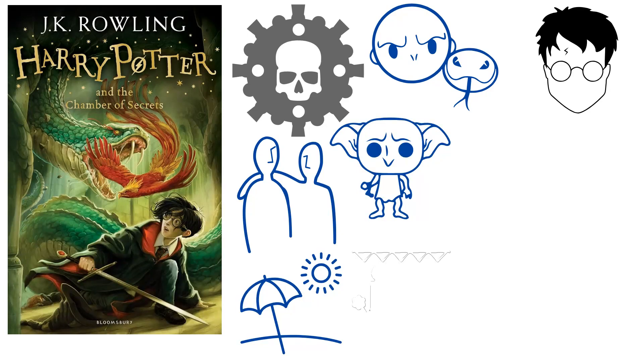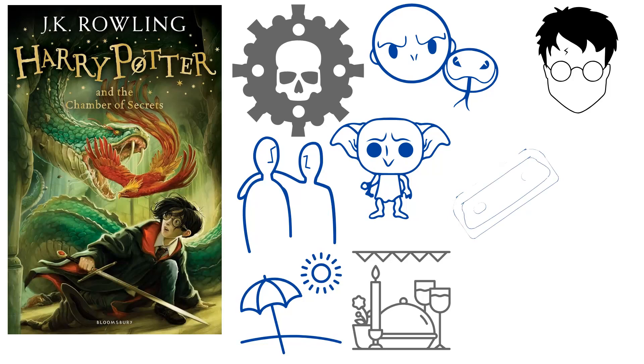A few days later, Harry's friends Ron, Fred, and George Weasley rescue him from the Dursleys in a flying automobile that their father had been working on as a side project. The remainder of Harry's summer vacation is spent with the Weasley family.